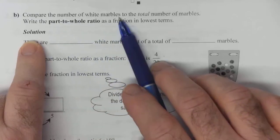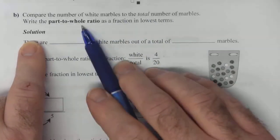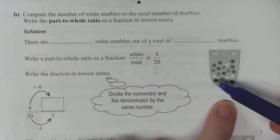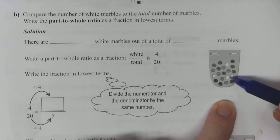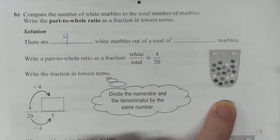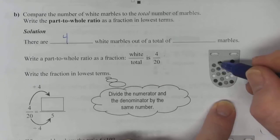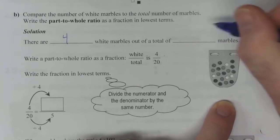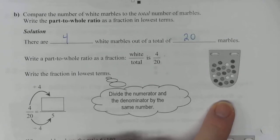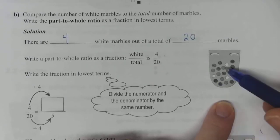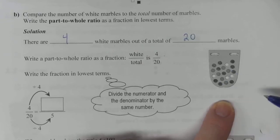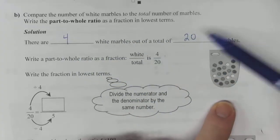Part B. Compare the number of white marbles to the total number of marbles. Write the part-to-whole ratio as a fraction in lowest terms. So again, we're looking at this bag. There are 1, 2, 3, 4 white marbles. Out of a total of 1, 2, 3, 4, 5, 6, 7, 8, 9, 10, 11, 12, 13, 14, 15, 16, 17, 18, 19, 20. So there are 20 marbles in total. Make sure you realize that you need to count the white ones both times. White is the part that we're looking at, but they're also included in the whole.